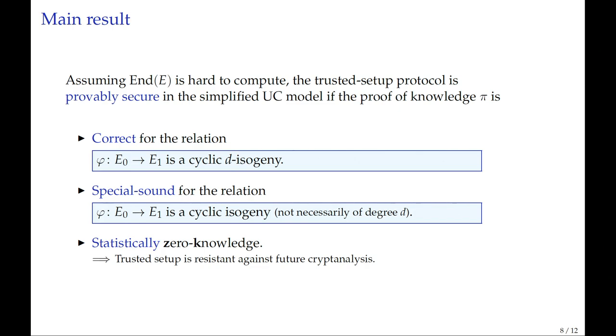To prove that this is secure, we need certain properties from our zero-knowledge proof. These are the classic zero-knowledge proof properties. Interestingly, the relation that we prove correctness and special soundness is slightly different. In the correctness case, an honest prover shows that they know an isogeny of a specific degree, whereas for special soundness, we are satisfied with an isogeny of any possible degree. In our case, this is sufficient because the Trusted Setup works as long as the participant knows an isogeny between any two curves.